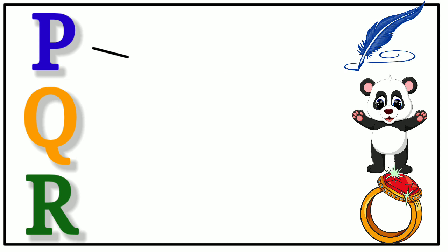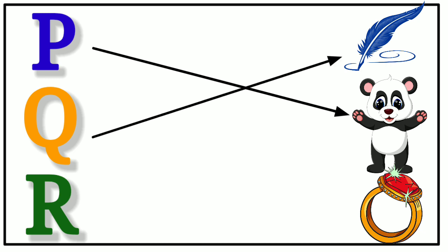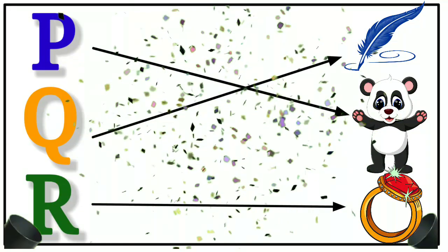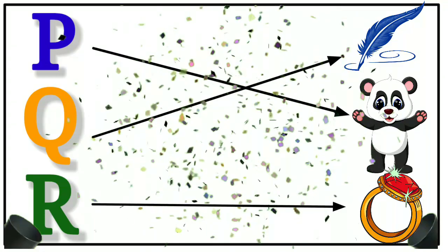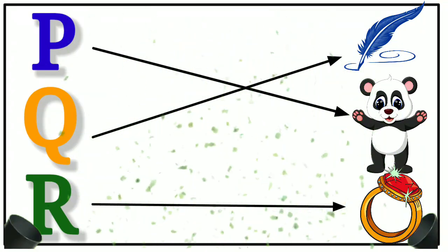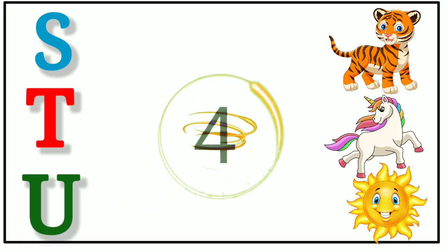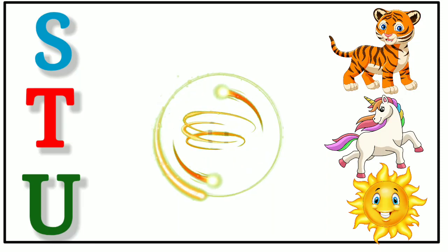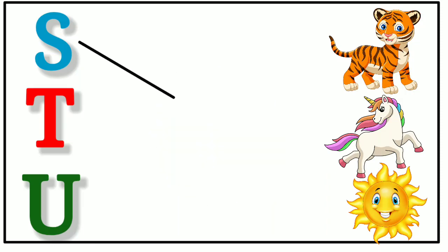P for panda, Q for quill, R for ring, S for sun.